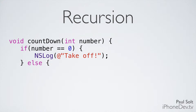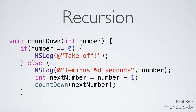When number equals 0, we're going to print out the message NSLog 'takeoff' to the console. Our next condition is: if it's not yet 0, we print out 't minus' then the number of seconds, then we calculate the next number — int nextNumber equals number minus 1. Then we make a recursive function call to ourselves: countdown, passing in nextNumber, which will be one less than our current value, and it repeats.